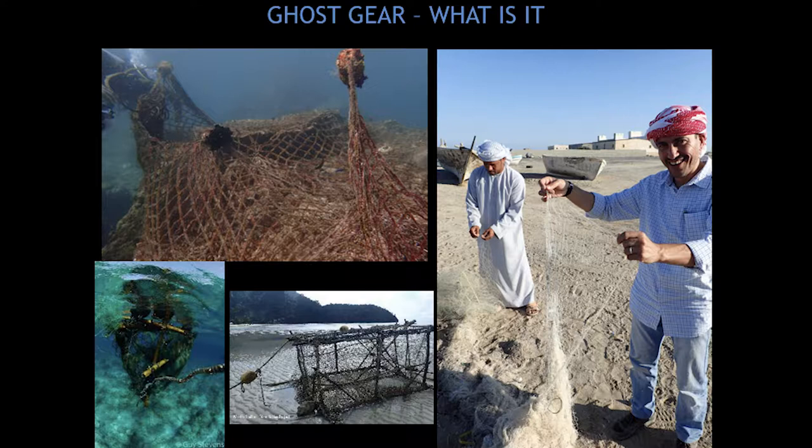Ghost gear is abandoned, lost, or discarded fishing gear. It can come in many different forms — nets, fish aggregating devices (FADs) that float on the surface and collect fish, and also traps and pots. There are many different forms. What causes ghost gear? Fishing can accidentally lose nets, but more often they are lost during operational procedures — nets get snagged on rocks, on wrecks, and fragments are lost that way.